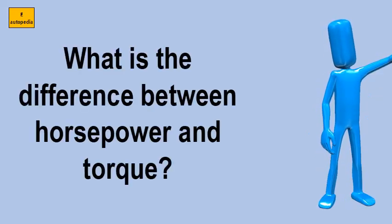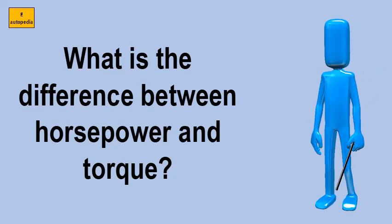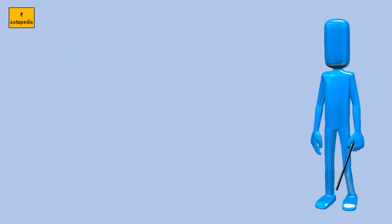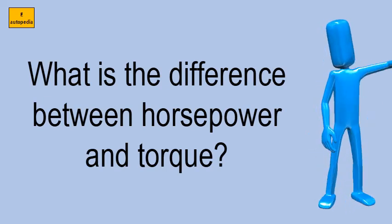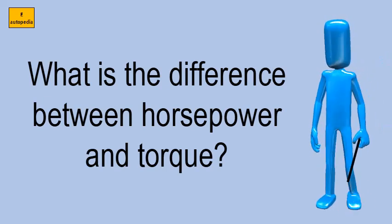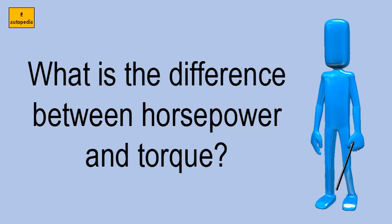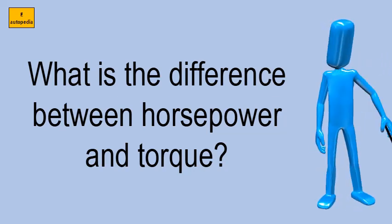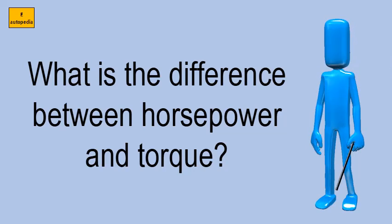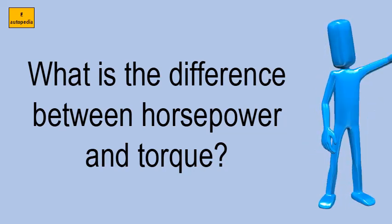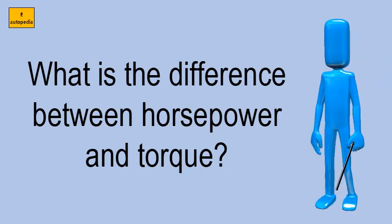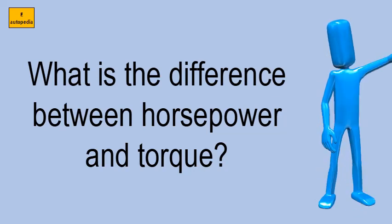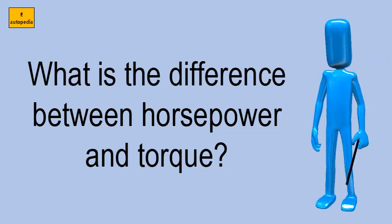What is the difference between horsepower and torque? Mathematically, horsepower equals torque multiplied by RPM. H equals T times RPM divided by 5252, where H is horsepower, T is pound-feet, RPM is spinning, and 5252 is a constant that makes the units jibe.